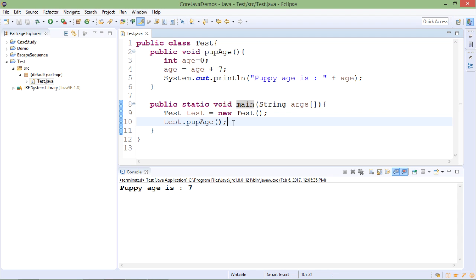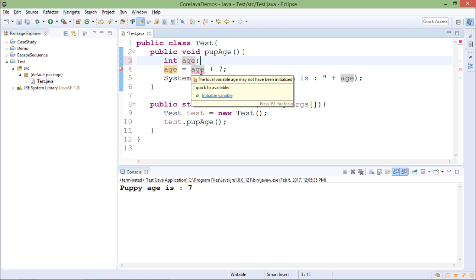Now for local variables you should have some initial value in that. If you use them without initialization, suppose I remove this thing, then it will throw error. If you use local variable without initialization it will throw error. You can see the error here. It is saying that the local variable age may not have been initialized.